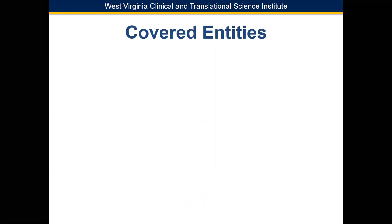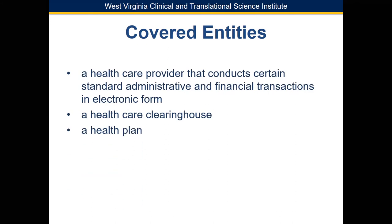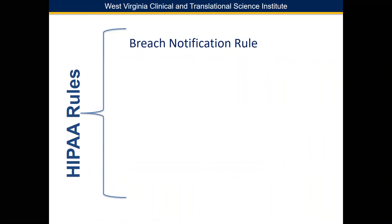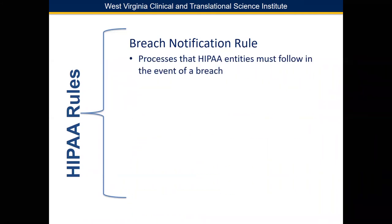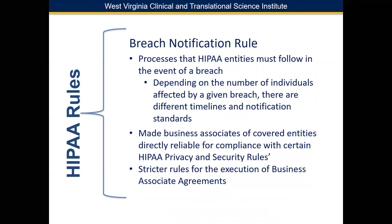What's considered a covered entity? It's a healthcare provider that conducts standard administrative and financial transactions in electronic form, a healthcare clearinghouse — also referred to as medical claims clearinghouse — acting as a third-party intermediary between providers and payers, and a health plan. The breach notification rule outlines the process HIPAA entities must follow in the event of a breach, with different timelines and notification standards depending on the number of individuals affected.